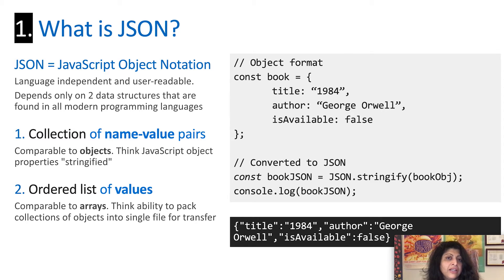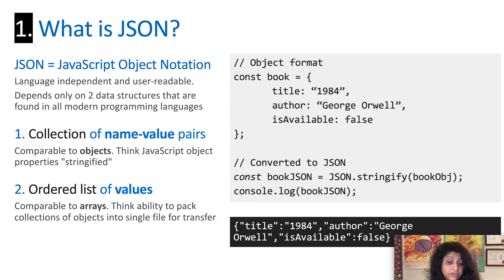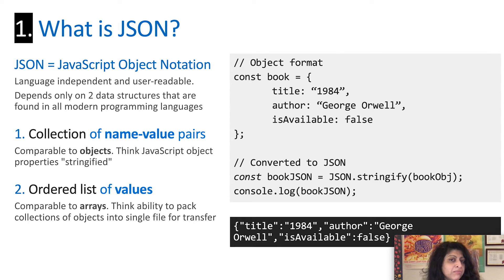This is where JSON comes in. JSON is a lightweight data exchange format that is language-independent and user-readable. In the example on the right side, you can look at what a JavaScript object literal — in this case, a book with three properties: title, author, and is available — looks like when it is converted into an equivalent JSON string, shown below in black. Pretty readable, right? JSON is a language-independent format because any modern programming language that supports two kinds of data structures can use JSON.